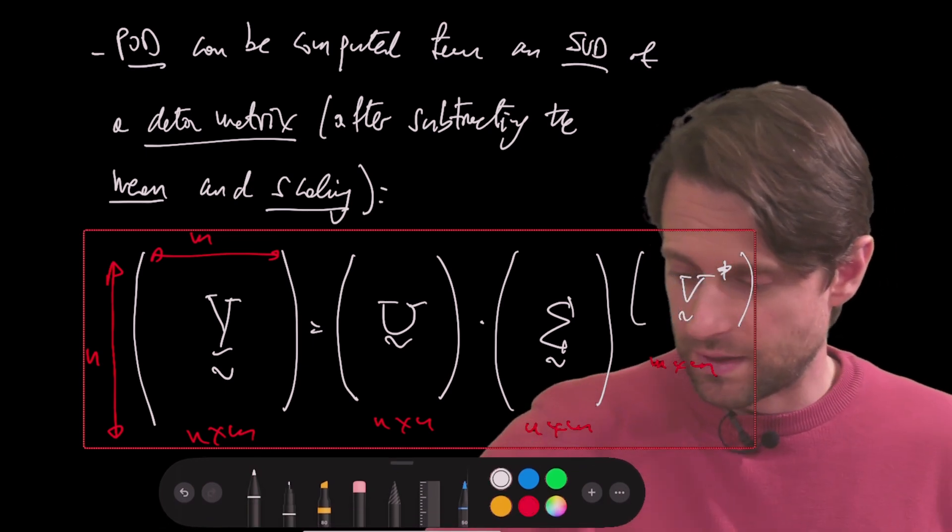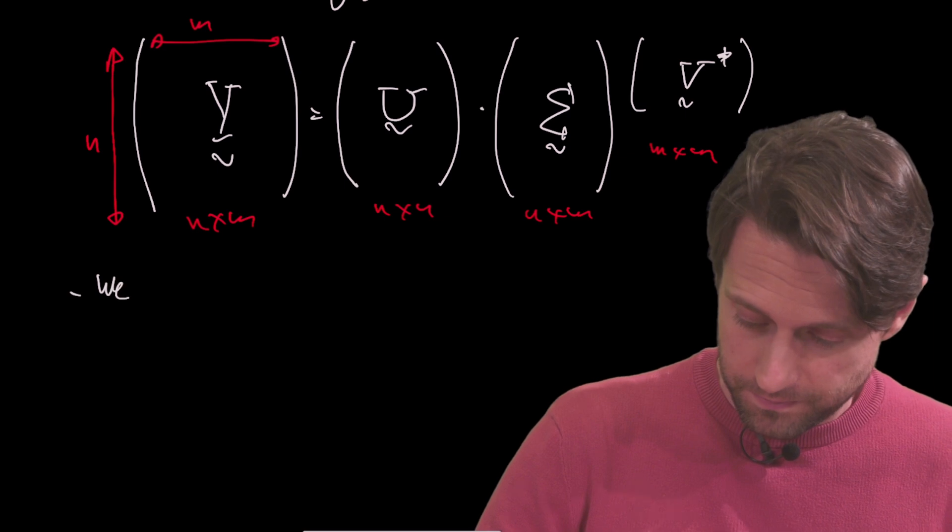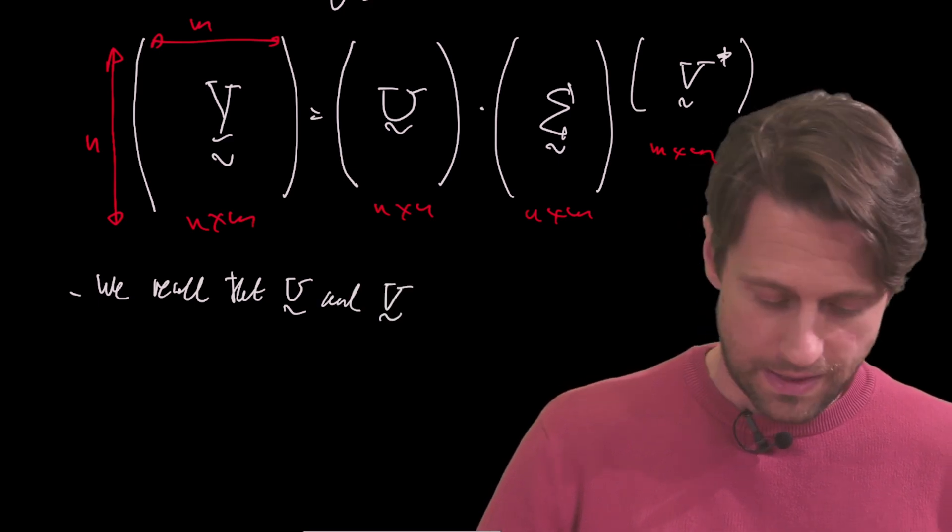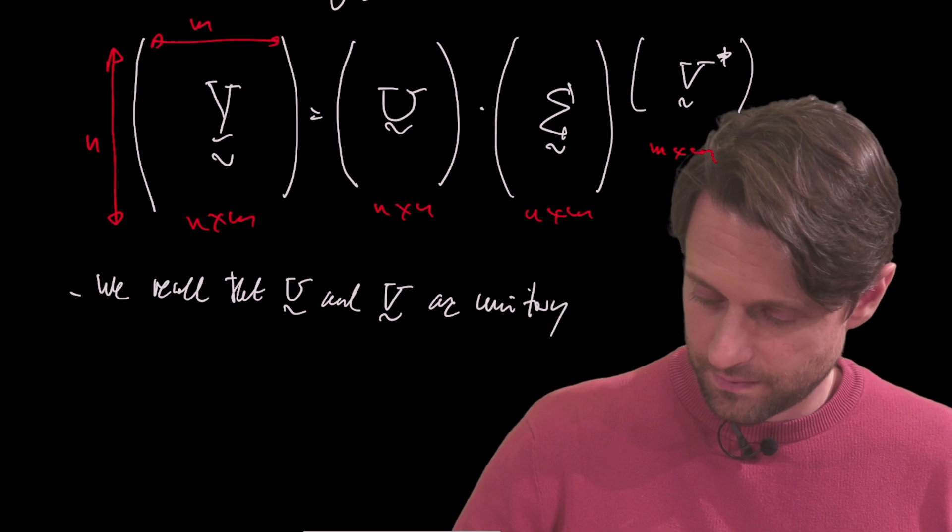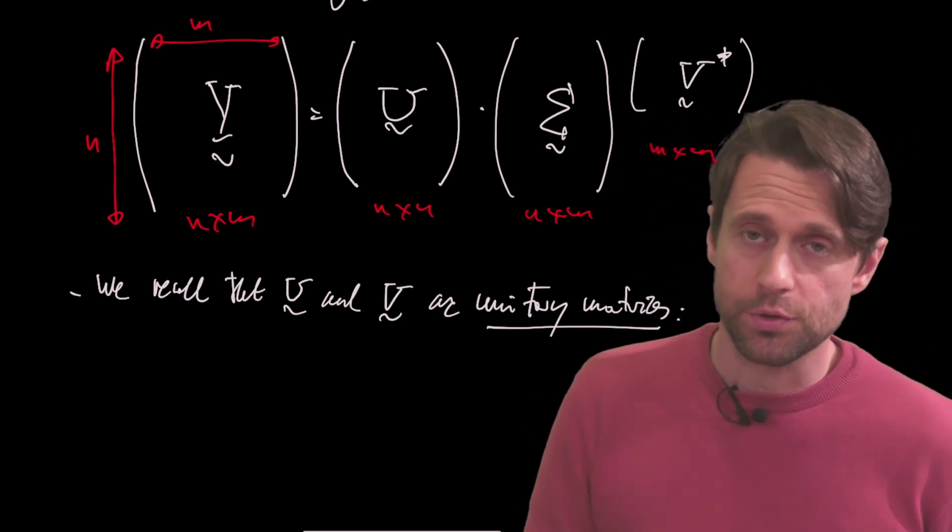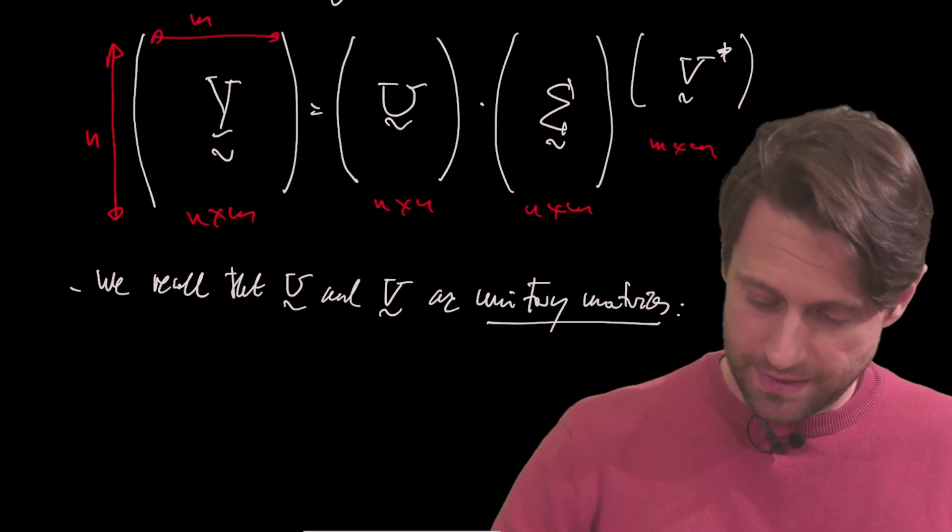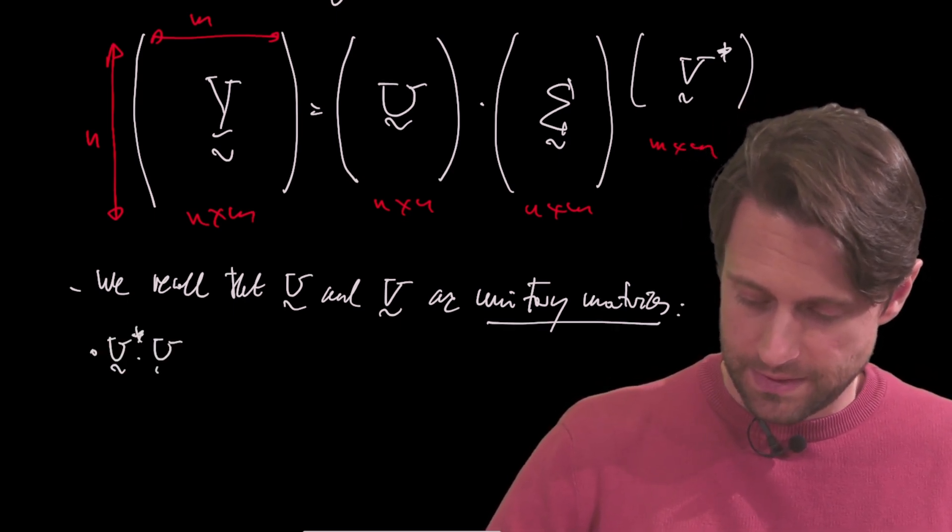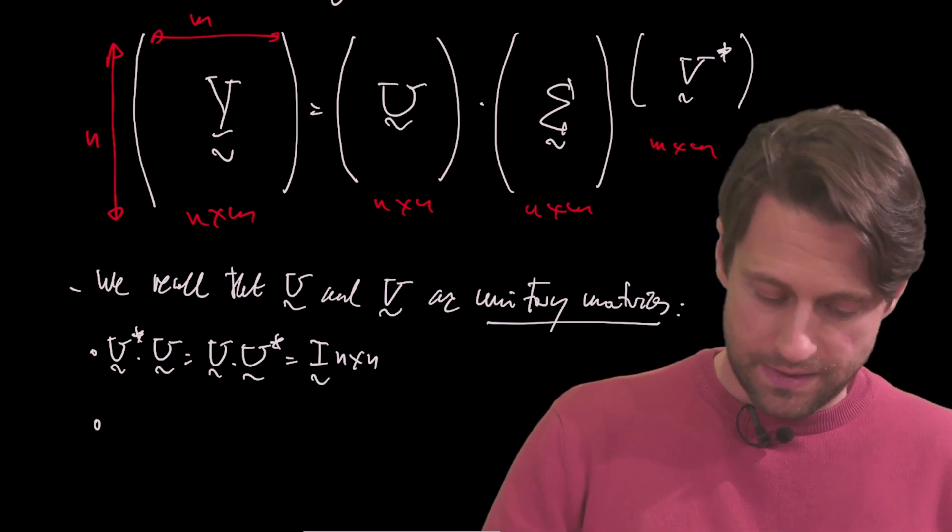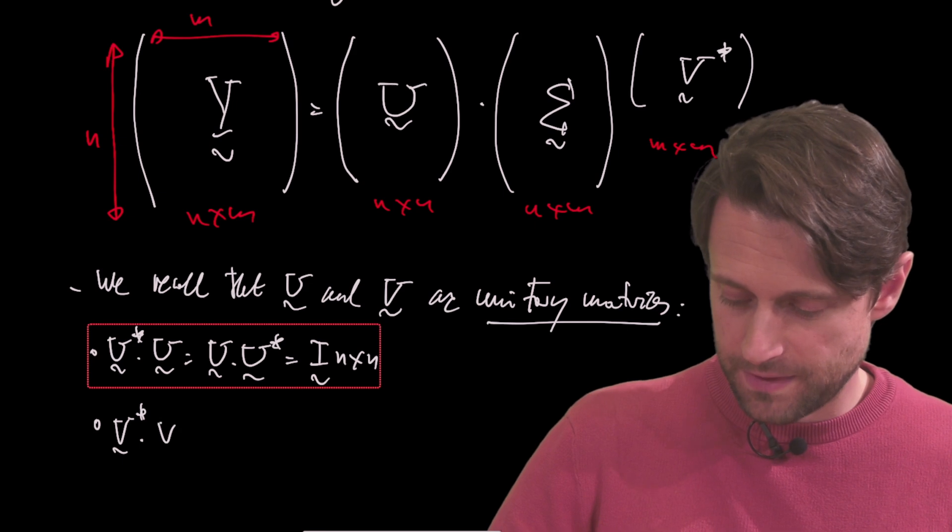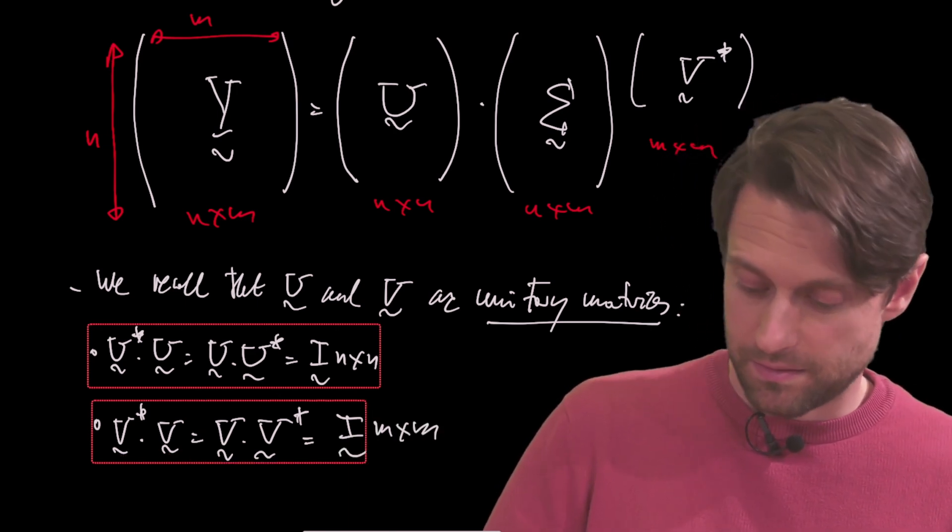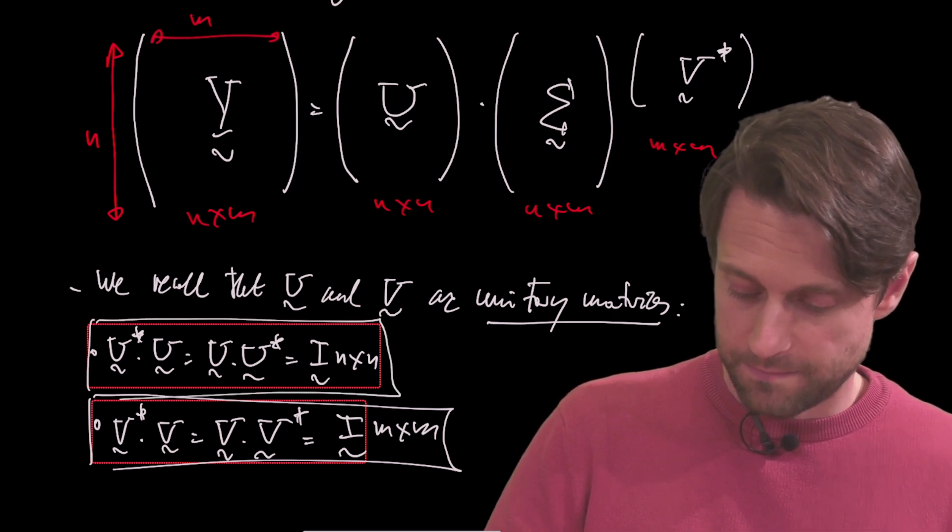Now remember that U and V are unitary matrices. That's always a property that we recall when analyzing the systems with SVD. So we recall that U and V are unitary matrices. What does it mean? That means that if we multiply them by their transpose, then we get the identity matrix. So this means that U star times U is going to be equal to U times U star, and this is the identity of size n_x by n_x. But also if we do the same with V, V star times V is equal to V times V star. This again gives me the identity matrix, in this occasion of size n_t by n_t. So I have these two properties that I can use.